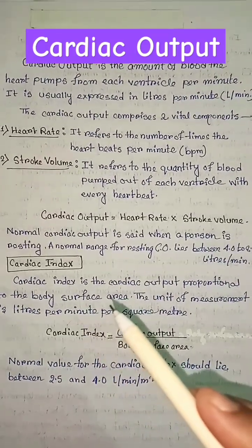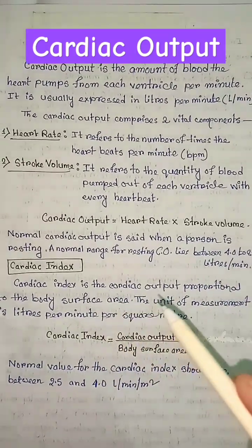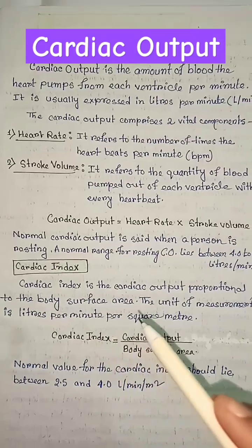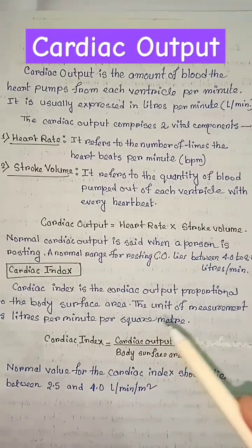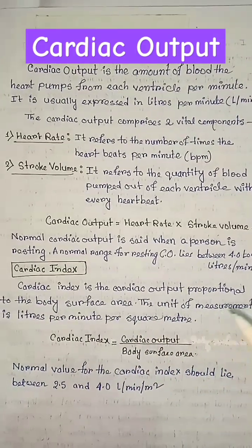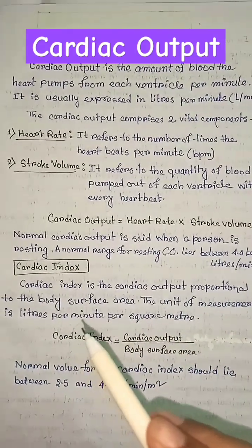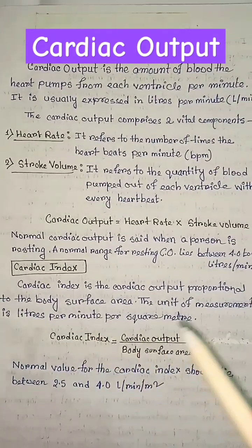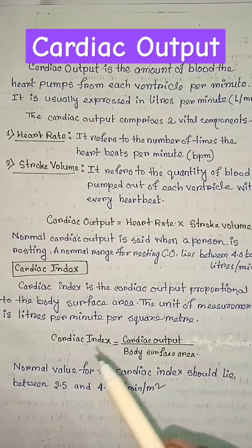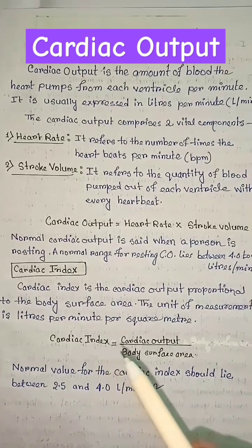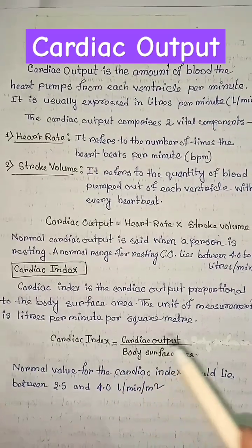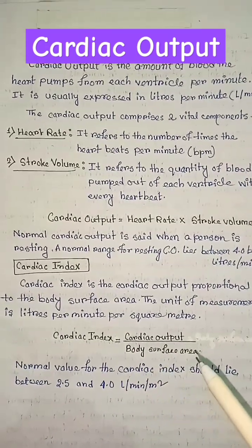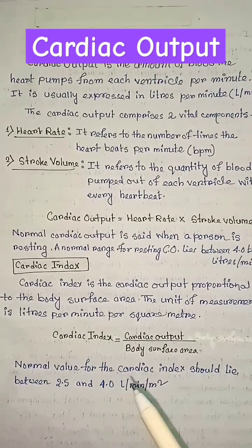Cardiac index is the cardiac output proportional to the body surface area. The unit of measurement is liters per minute per square meter. Cardiac index equals cardiac output divided by body surface area. Normal value for...